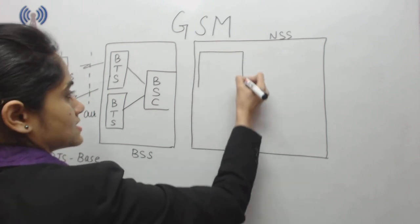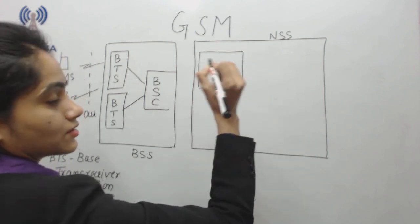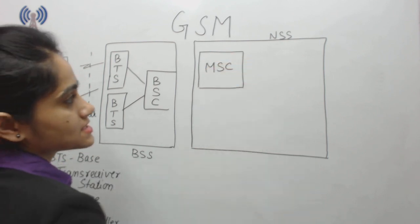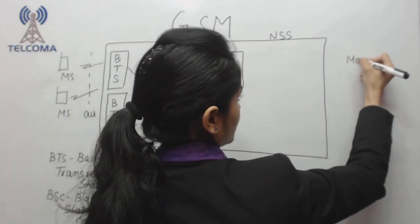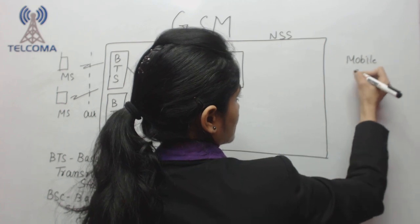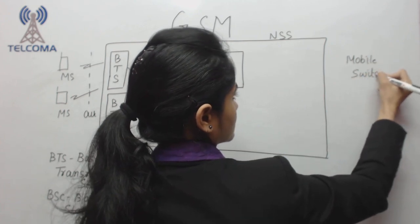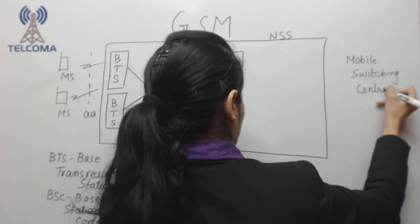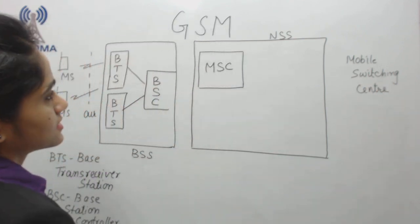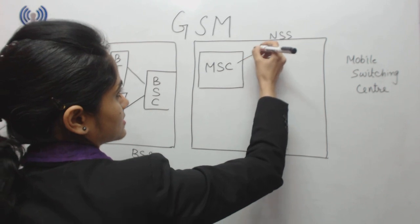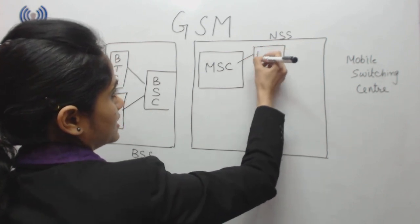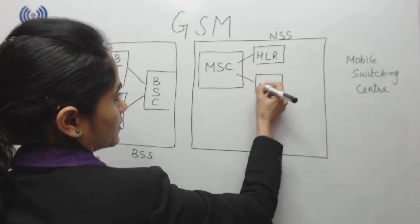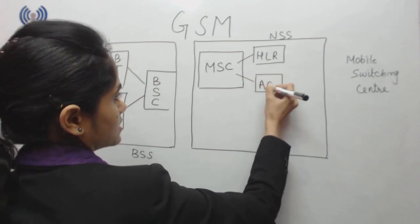The NSS contains the central heart of the network — the main controller — which is the MSC. MSC stands for Mobile Switching Center. This Mobile Switching Center is connected to its various databases.